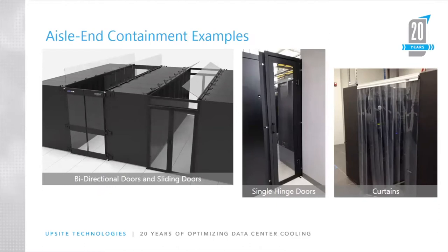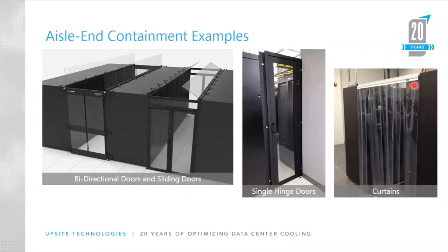Here are a few examples of what doors are available. There are bi-directional doors that swing in and out and attach magnetically. There's a wide variety of sliding doors available on the market — this one has a transom above it to match the height of the cabinets. There are also single hinged doors that typically swing out and hinge on one side, and of course curtains, which, although they have problems, solve some challenging situations where conditions make it difficult to install a door at the end of an aisle.